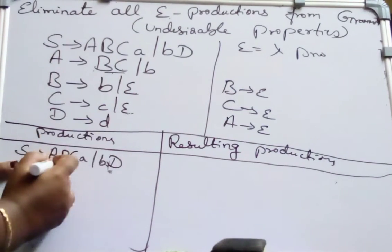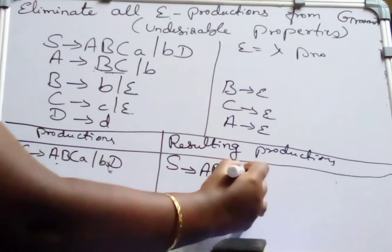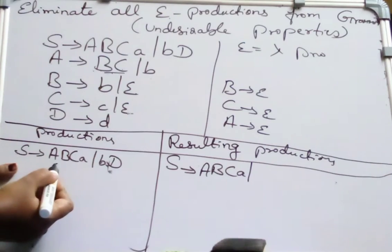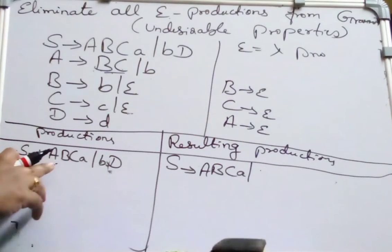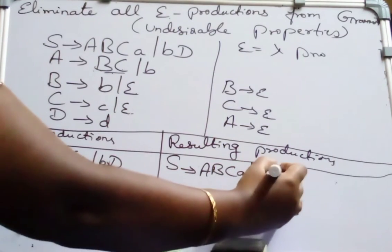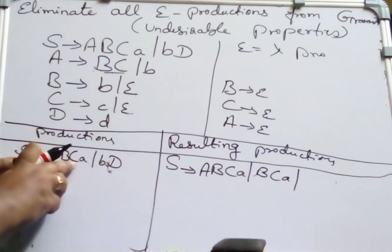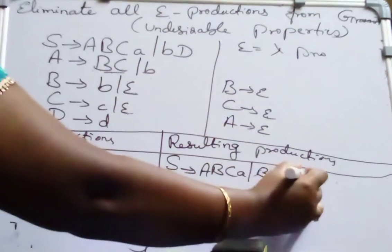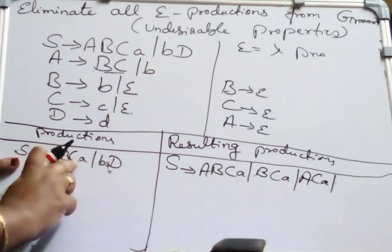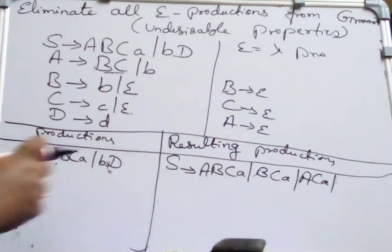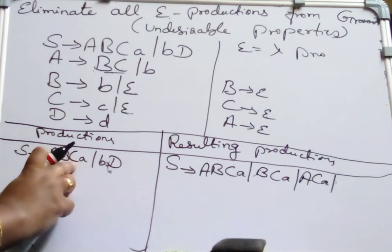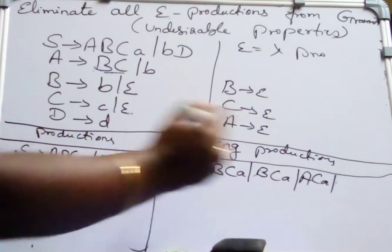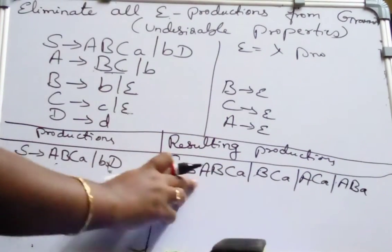First, write whatever production is given as it is: S derives A, B, C, A. If I substitute epsilon for A, then I will get S derives B, C, A — because A derives epsilon. After substituting epsilon for A, I get B, C, A. If I substitute epsilon for C, I will get A, B, A. So at this point we have substituted epsilon for each of the variables one at a time.